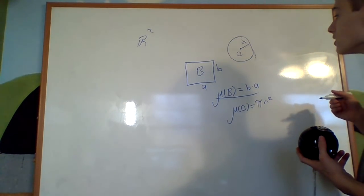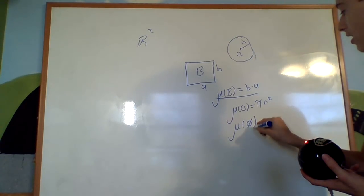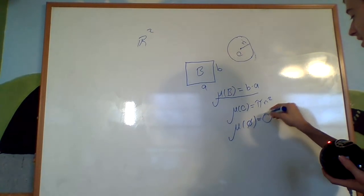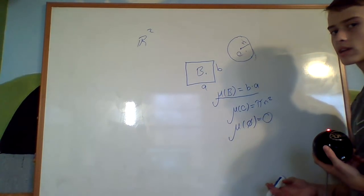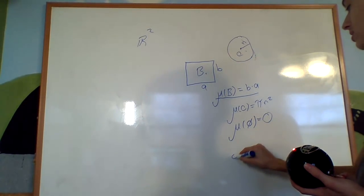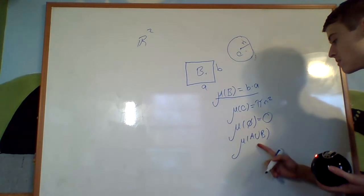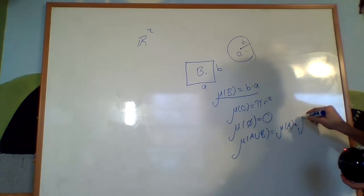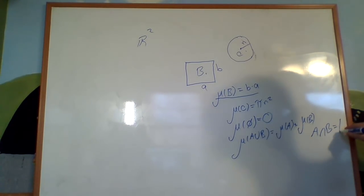Note that there are some other things you'd expect from this. If I had a set with nothing in it — denoted with the empty set symbol — you'd expect that to be zero. And if I were to combine these two sets, the box and the circle, their areas would just add. So that means mu of A union B equals mu of A plus mu of B, as long as they are disjoint, meaning their intersection is empty.